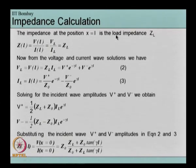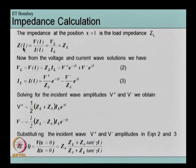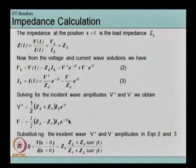If we continue using x as the variable, we get the following relations for V_L and I_L, that is the voltage and current at the load end. The impedance at the load end Z_L is equal to V_L upon I_L. From these equations we solve for V+ and V− and then find Z of −l, that is the impedance at the source.